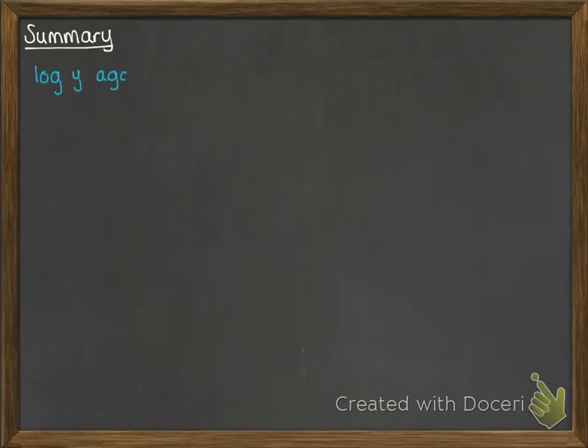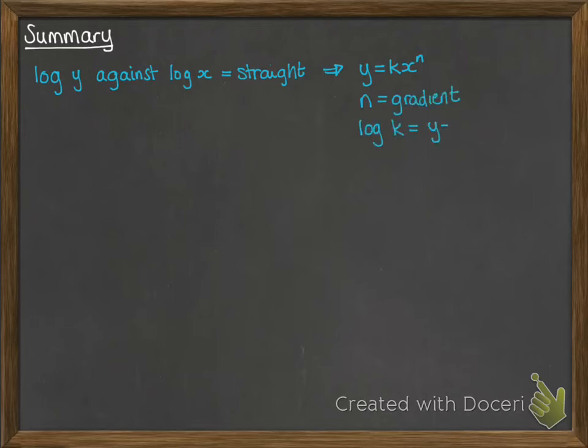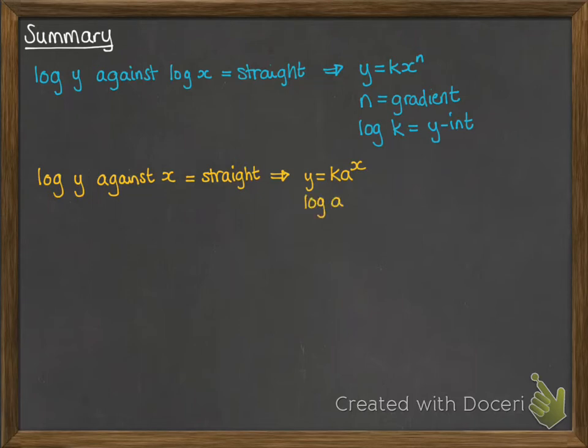Let's have a look at a summary of those. If log y against log x gives us a straight line, then we have y equals kx to the n as the form of our equation, n being the gradient, log k being the y-intercept. If it takes plotting log y against x to get a straight line, then we have the other form, y equals ka to the x, where log a gives us the gradient and log k gives us the y-intercept.